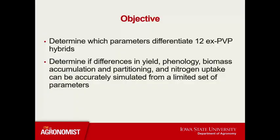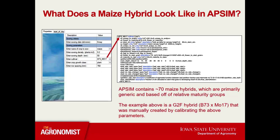My objective was to determine which parameters differentiate 12 ex-PVP hybrids that are part of Genomes to Fields, and determine if differences in yield, phenology, biomass accumulation and partitioning, and nitrogen uptake can be accurately simulated using a limited set of parameters. This is a snapshot from APSIM's user interface, written in XML format. APSIM contains around 70 maize hybrids, but these are primarily generic and based off of relative maturities. This example I'm highlighting is a G2F hybrid that I manually created by calibrating the parameters shown in this XML file.